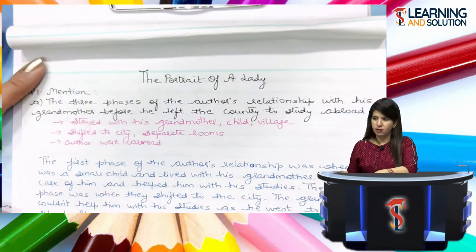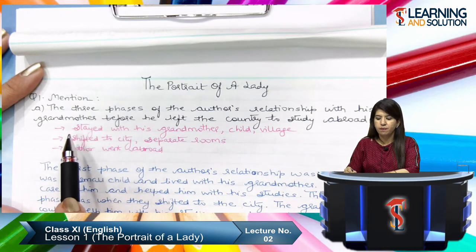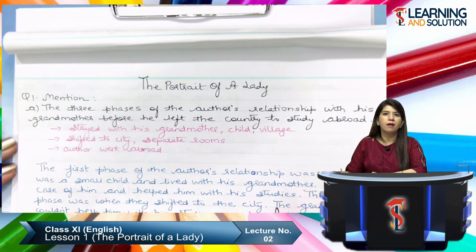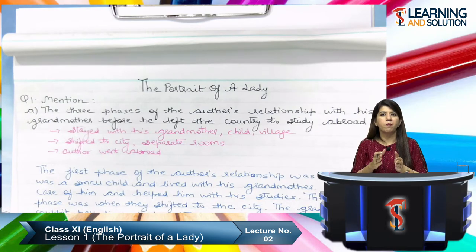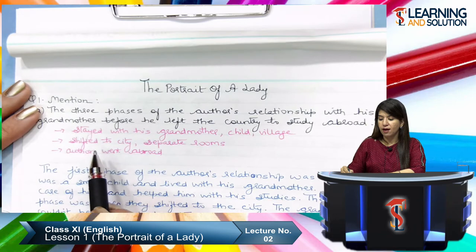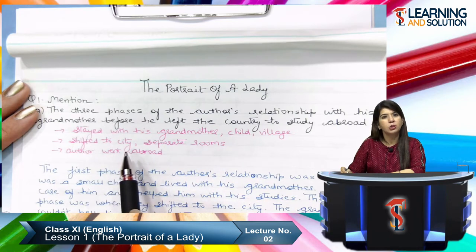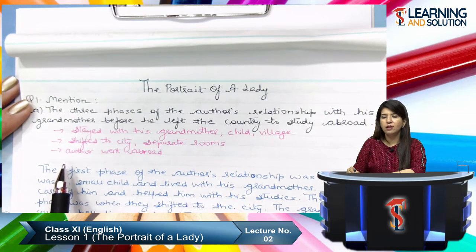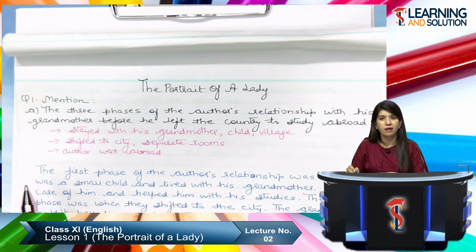The first question of your textbook is: mention the three phases of the author's relationship with his grandmother before he left the country to study abroad. When discussing the chapter, we have to discuss the relationship between the grandmother and her grandson Khushwant Singh, our author, in different phases — when he was in the village, when he moved to the city, and later when he went abroad.